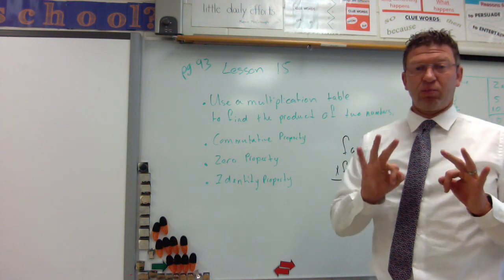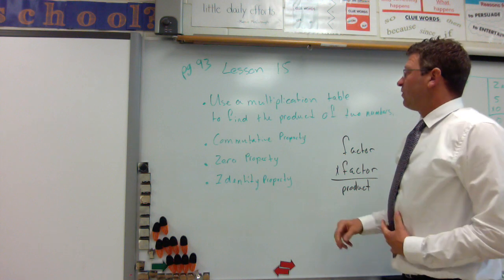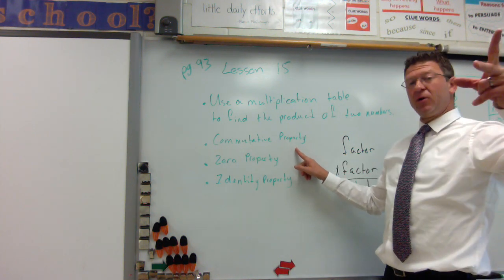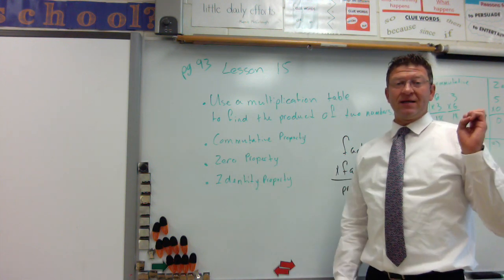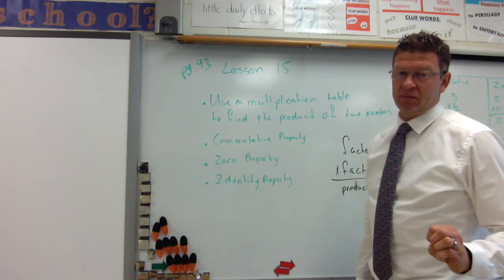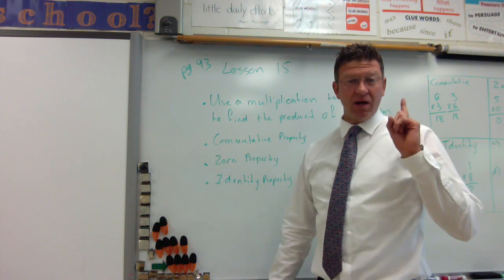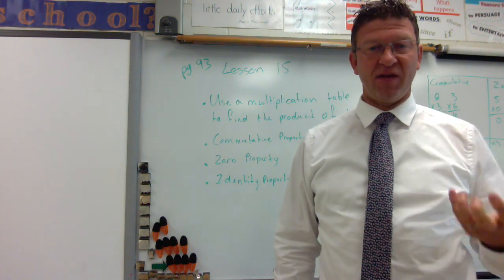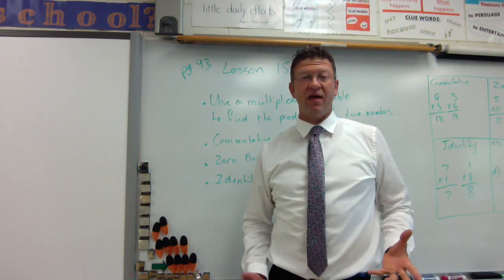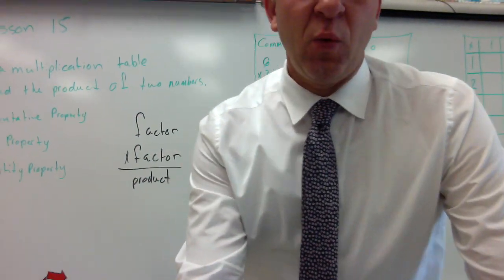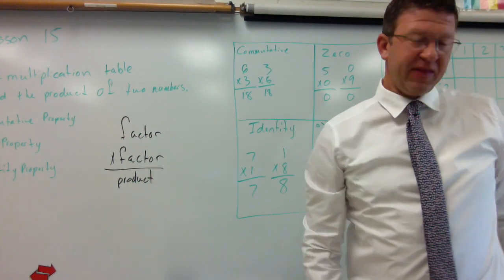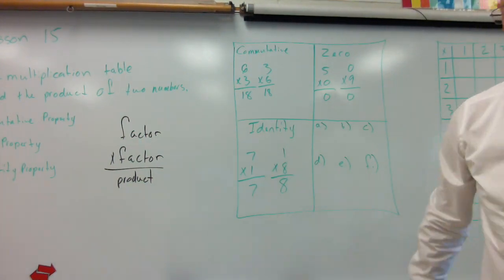We're also going to talk about three different properties of multiplication. The commutative property is the same as addition - flip it over you get the same answer. The zero property is any number times zero is zero. And the identity property is any number times one you see yourself like in a mirror. Nine times one is nine, ten times one is ten.